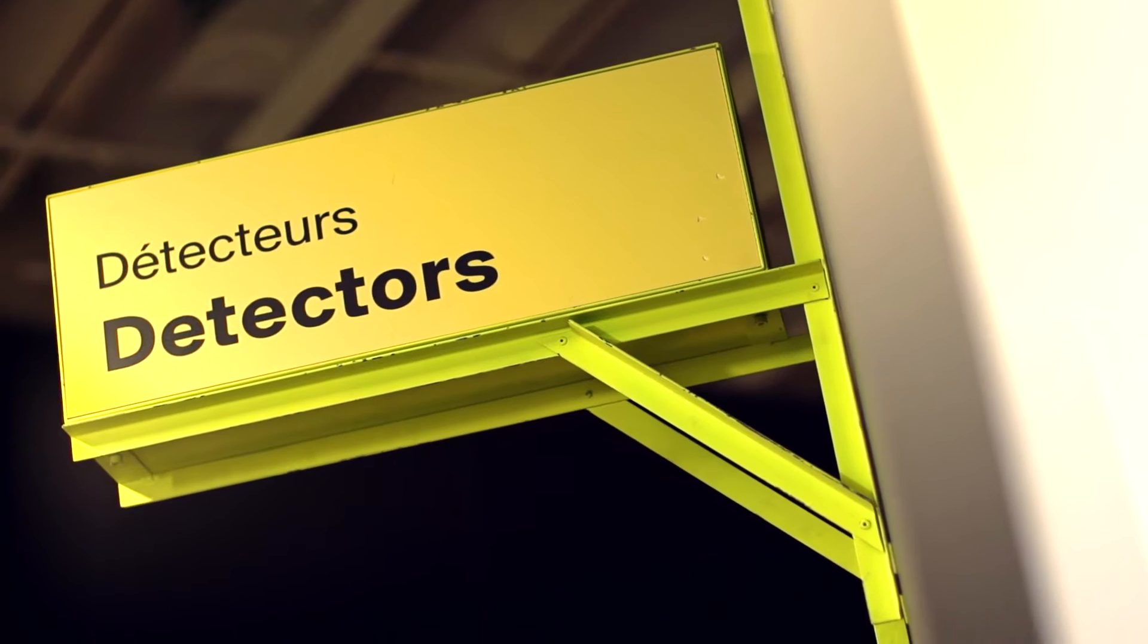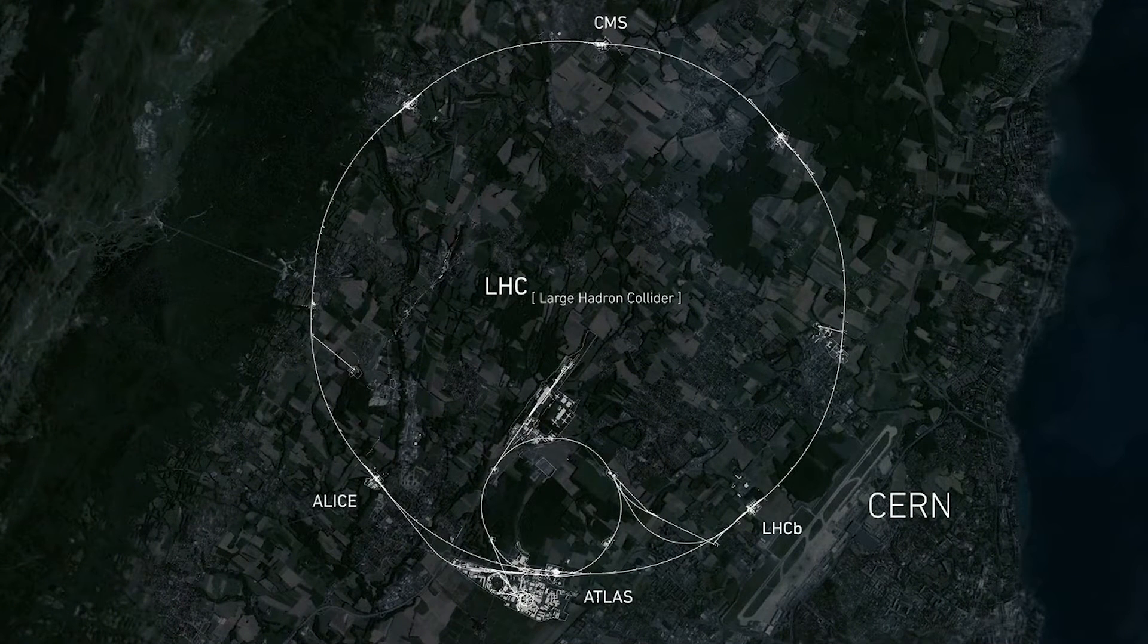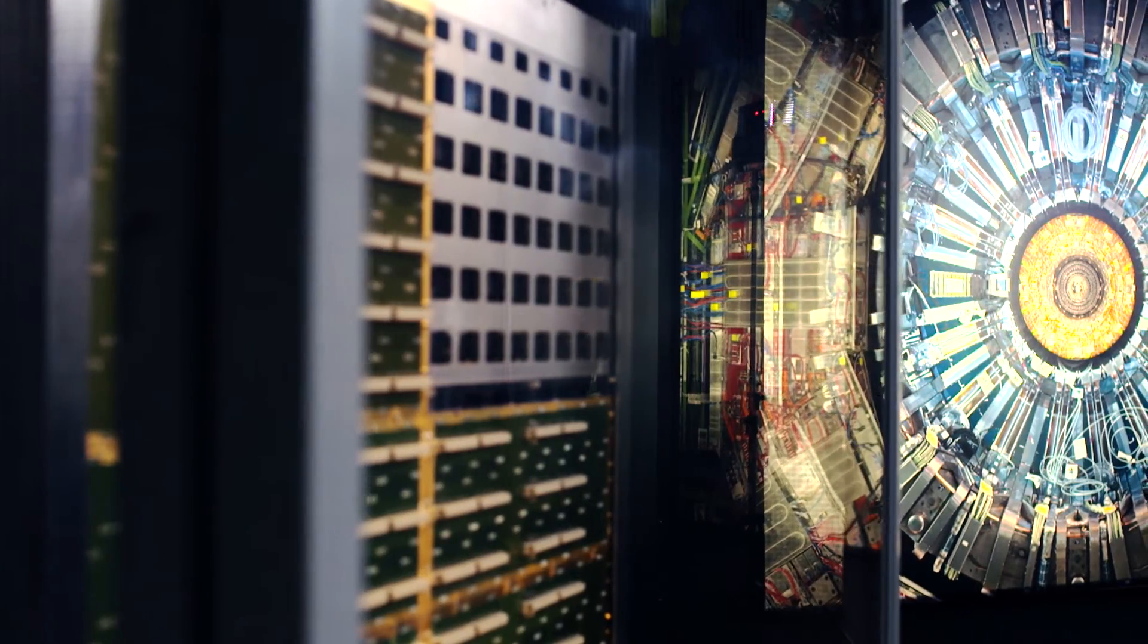So there are four detectors around the LHC ring: ATLAS, CMS, ALICE, and LHC-B. The two biggest ones are ATLAS and CMS, and they are multi-purpose detectors. They're designed to do quite a wide range of physics, amongst which was looking for the Higgs boson.